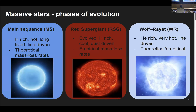Massive stars have high mass loss rates throughout their lives in various evolutionary phases, including on the main sequence, during the red supergiant phase when they finish core hydrogen burning, expand to become these cool red supergiants, and for more massive stars and potentially stars in binaries where interactions can remove the hydrogen envelope, you can get these stripped Wolf-Rayet stars that also have very high mass loss rates.